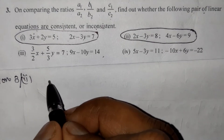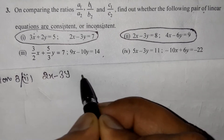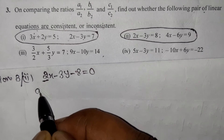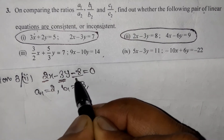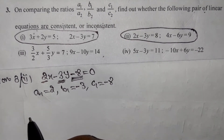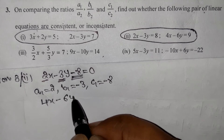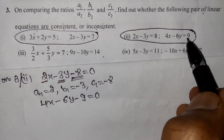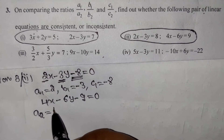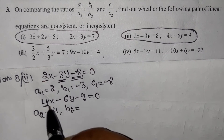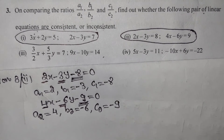Second pair: 2x − 3y − 8 = 0, giving A1 = 2, B1 = −3, C1 = −8. The next equation is 4x − 6y − 9 = 0, giving A2 = 4, B2 = −6, C2 = −9.